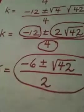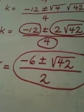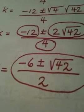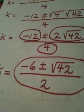So, I end up getting my answers, negative 6, plus or minus, the square root of 42, all over 2. And those are actually two answers. You could write one out with a plus and one out with a minus. And we're done.